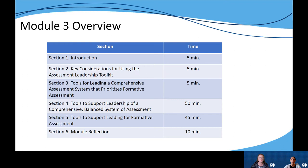Section one provides a brief overview of the module, including the learning goals and success criteria. Section two will orient participants to foundational resources and key considerations to support leaders in this work. Module three focuses on four assessment leadership competencies that can serve as a guide to effective assessment leadership. Section four walks leaders through a process they can use to establish a local comprehensive assessment system and the various tools to support each part of the process. Section five examines four steps in leading for formative assessment, as well as the tools to support each step. The module wraps up with leaders reflecting on their learning and brainstorming possible next steps.